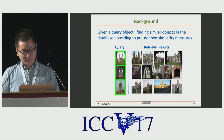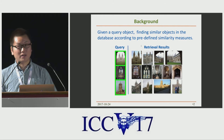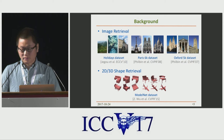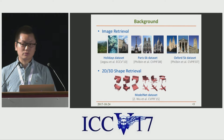This work focuses on object retrieval. Given a query object, a retrieval system needs to find those candidate objects in a database which are visually similar to the given query. The object that we talk about here is not only color images that we already deal with, but also includes some specific types, such as person images, sketch images, or 2D or three-dimensional shape models.